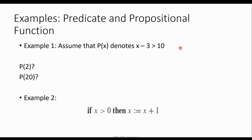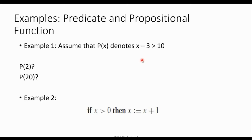Let's go through what we mean by predicate and propositional function. Take a look at these two examples. Assume that P(x) is a function which denotes 'x minus 3 is more than 10.' This is not a proposition by itself because we cannot say it is true or false. But if we give values as input of this function, then this one can be a proposition. P(2) is false because 2 minus 3 is not more than 10, but P(20) is true because 20 minus 3 equals 17, which is more than 10.